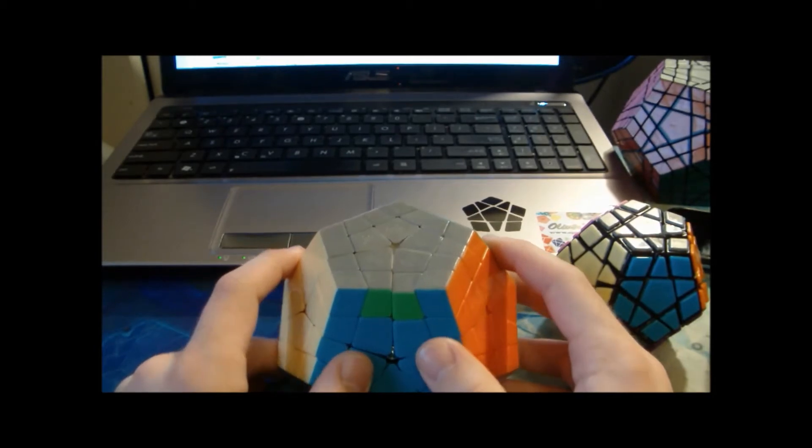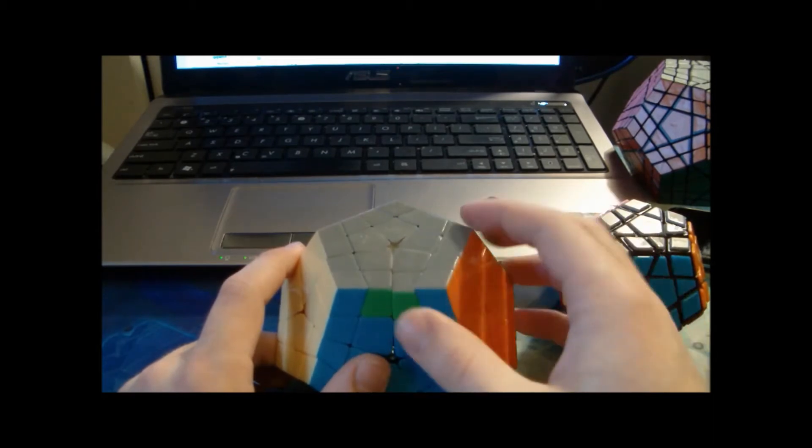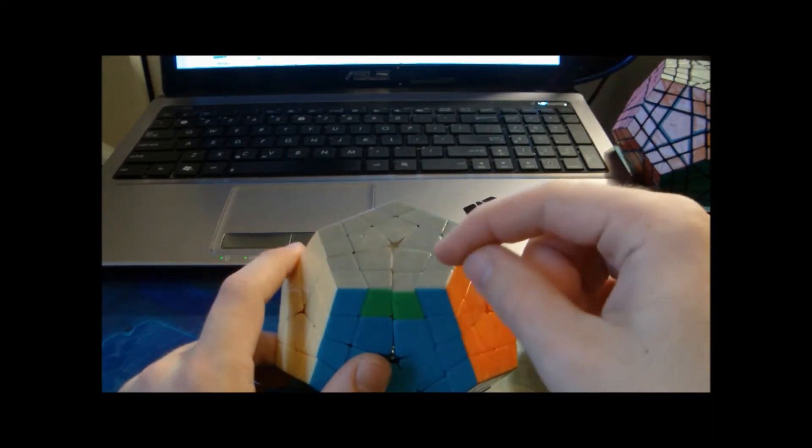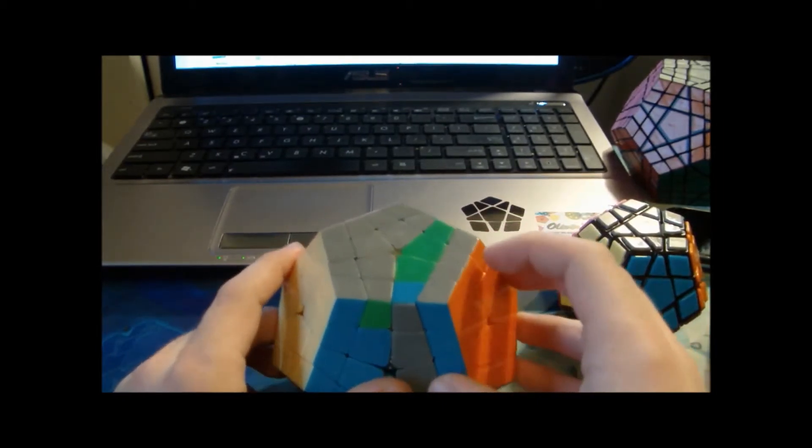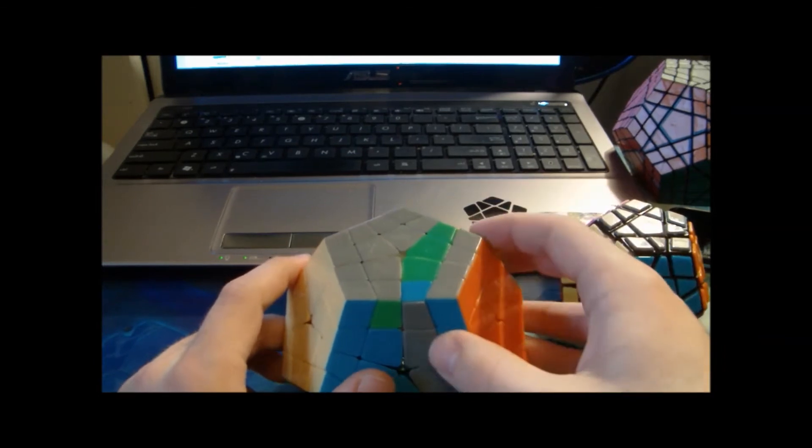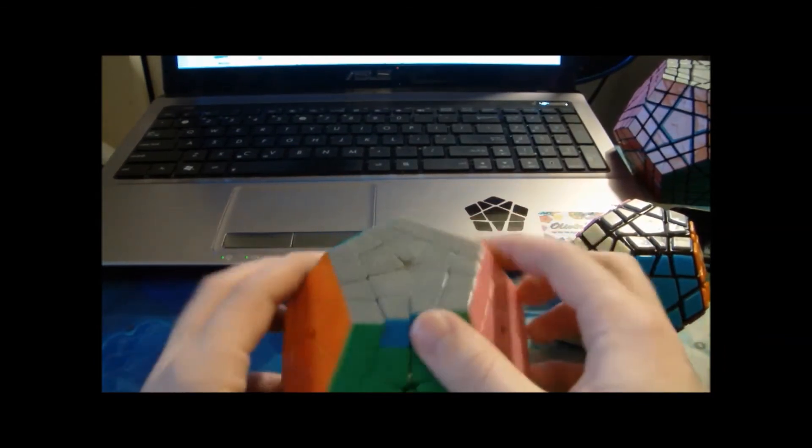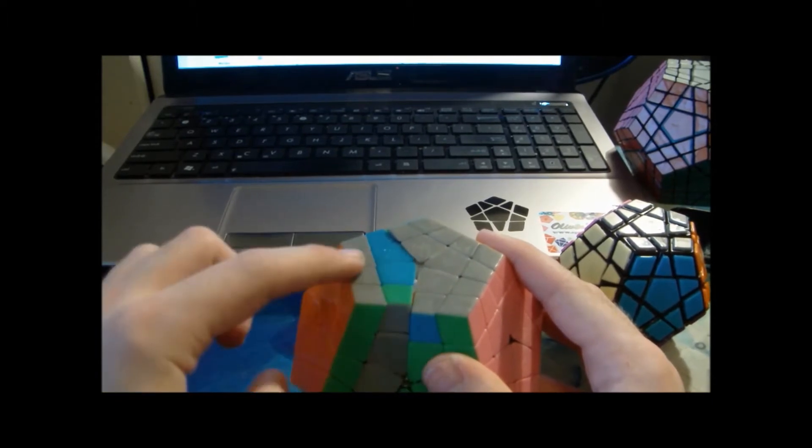Basically what this algorithm does is it sets up like this so that I flip this edge and this edge, then do a rotation, and then flip this edge and flip this edge back.